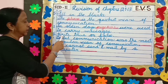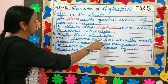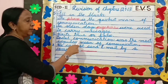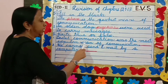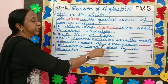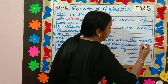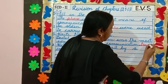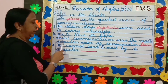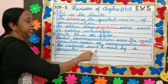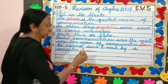Write true or false. Postal communication was the most popular means of communication. True. We cannot send email by a computer. False.